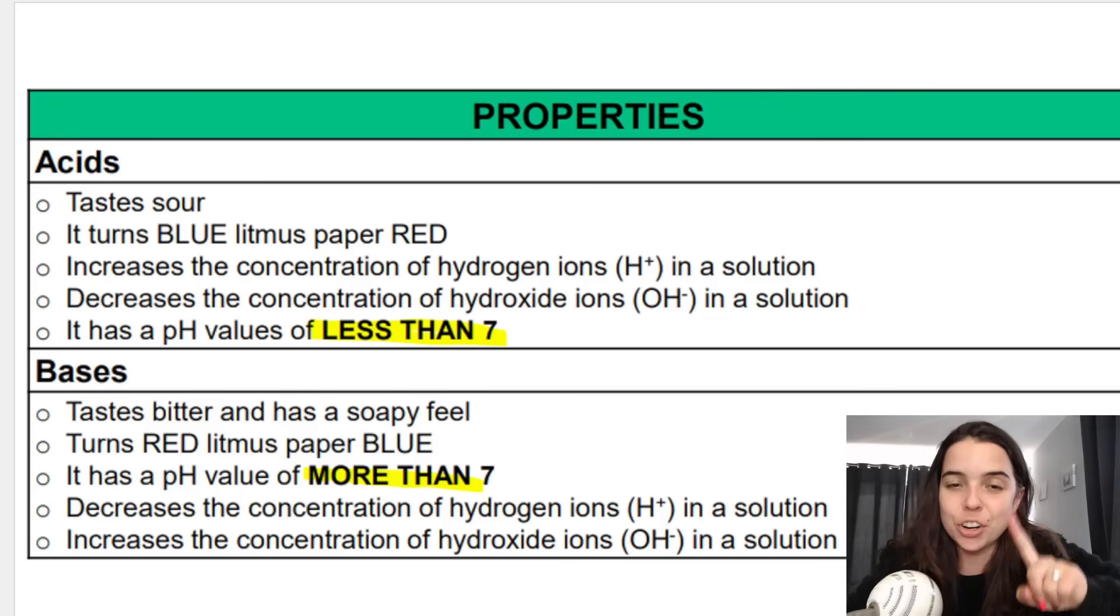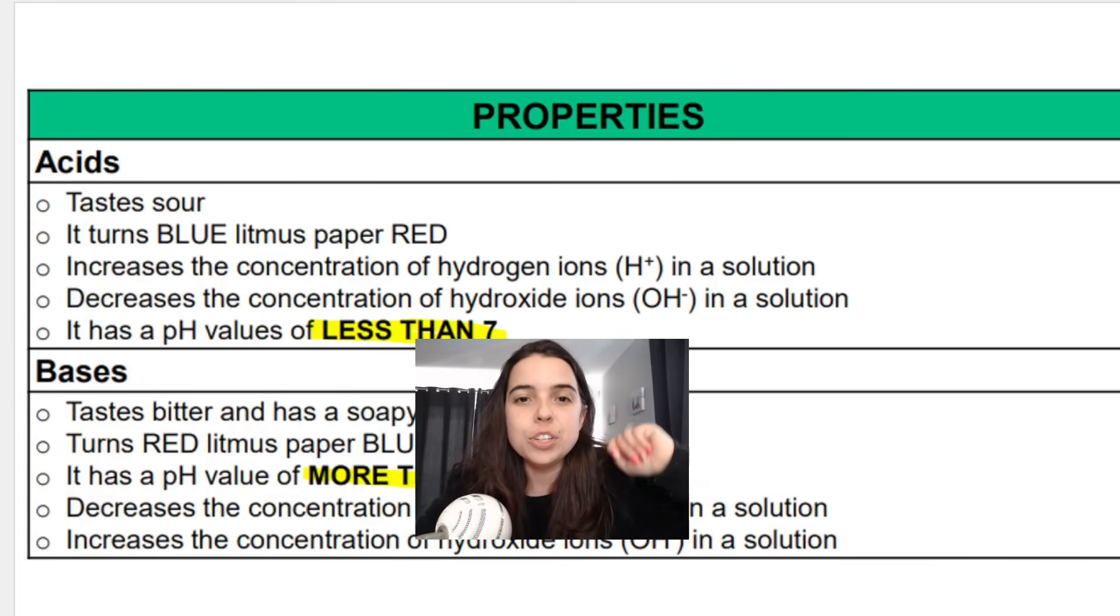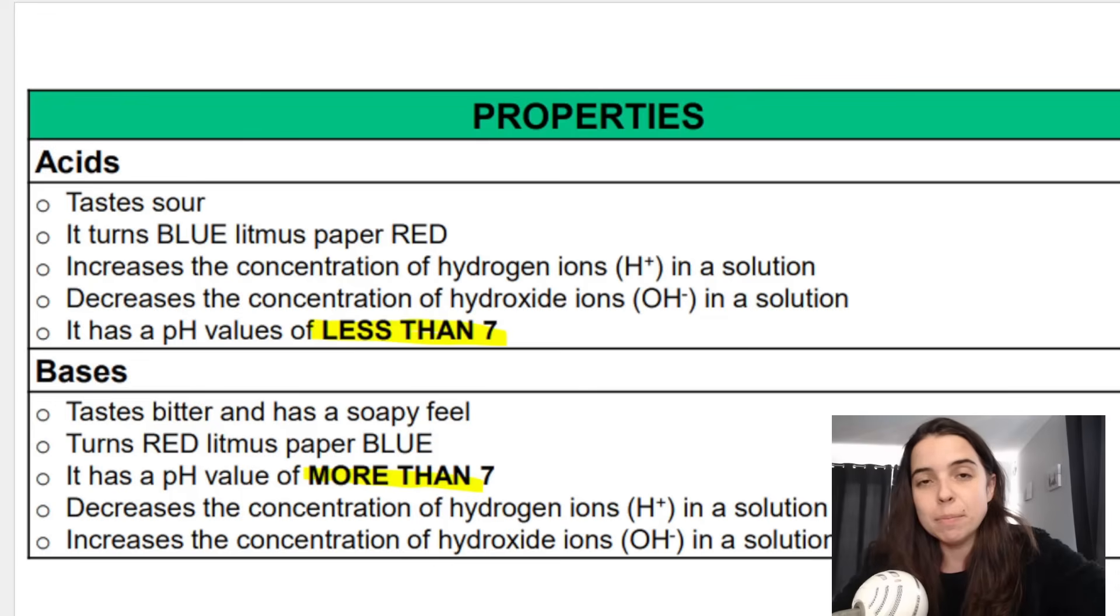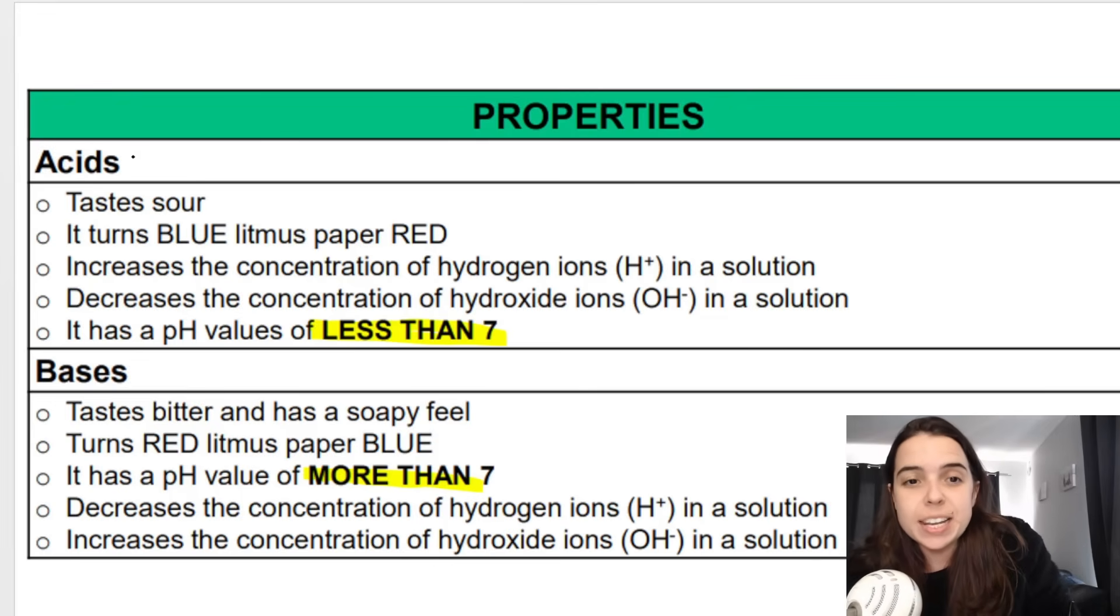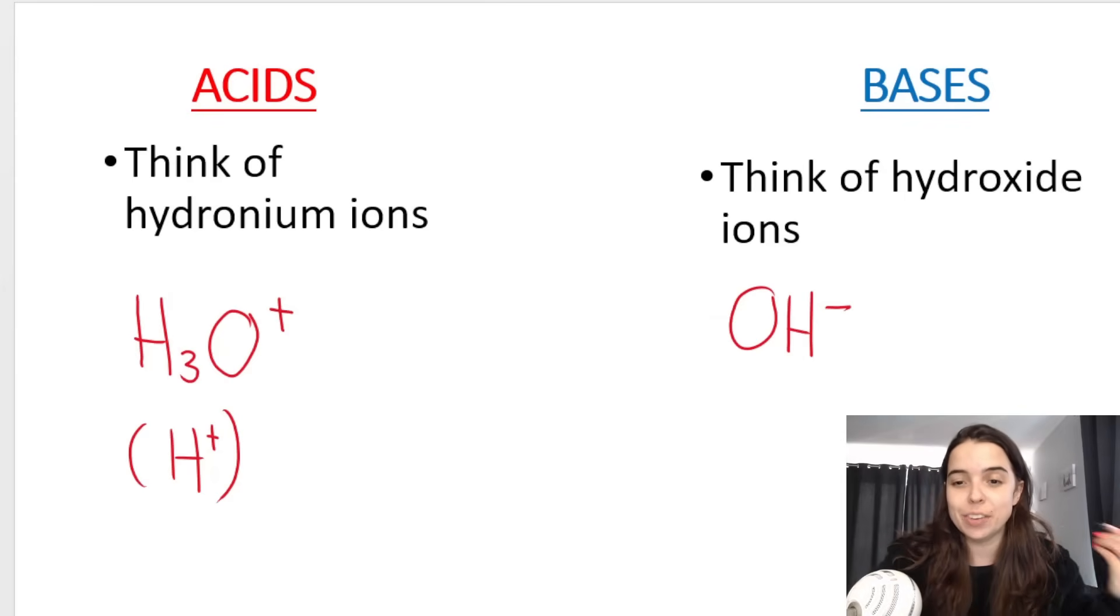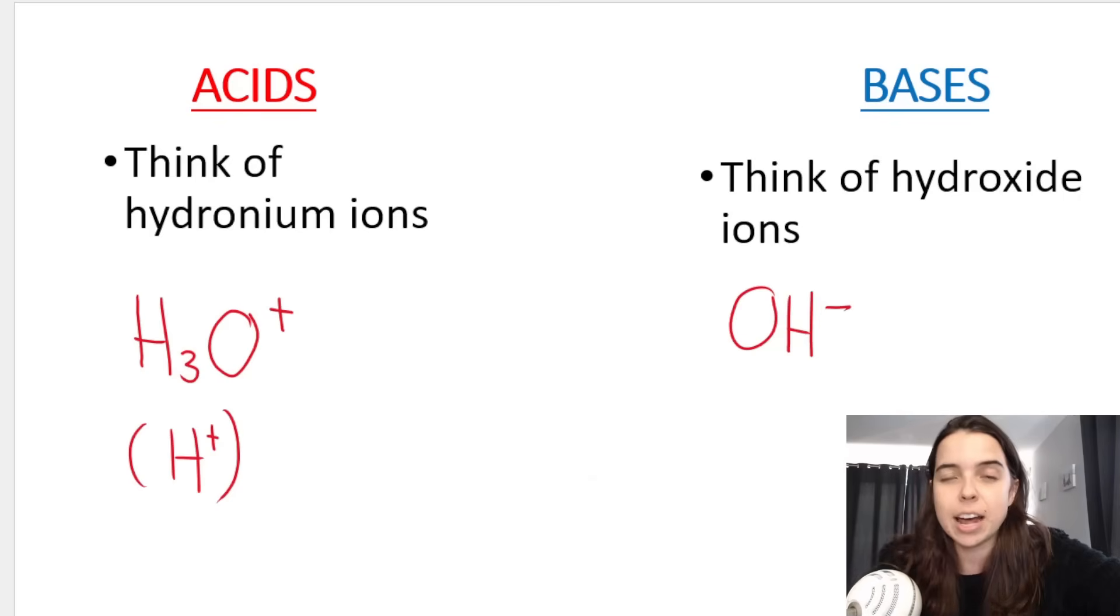The first thing that I want you to notice is that when you consider an acid, I want you to think of H+ ions in solution. In your mind, I want you to link acids with H+ ions or H3O+ ions. I'll explain why later, and bases I want you to link with OH- ions. When you think of acids, think of the hydronium ion, and bases, think of the hydroxide ion.